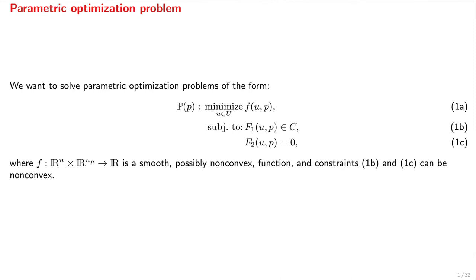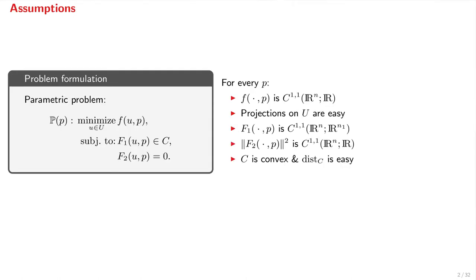We want to solve parametric optimization problems of this form. Here f is a smooth, possibly non-convex function, and the constraints can also be non-convex. We require that f be continuously differentiable in the decision variable u, with a Lipschitz gradient, for short C11. Projections on U must be easy to compute, F1 must be a C11 mapping, and F2 is such that the squared norm is C11. Lastly,